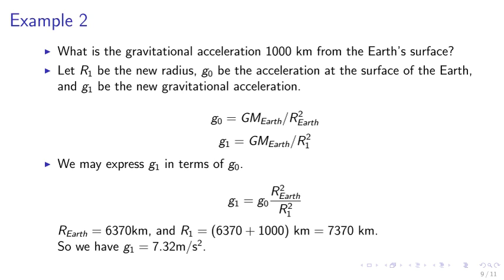Let me express g1 in terms of g0. g1 equals g0 r_Earth squared over r1 squared. If r_Earth equals 6,370 kilometers, r1 equals 6,370 plus 1,000 kilometers. So we have g1 equals 7.32 meters per second squared.